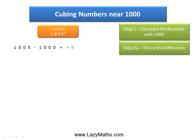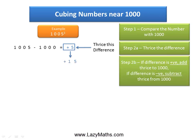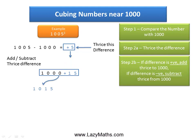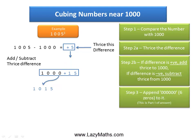The next step is to do thrice the difference. So 3 times positive 5 is positive 15. Then add this three-times difference to 1,000: 1,000 plus 15 gives us 1,015. The last step to get part 1 of the answer is to append six zeros to 1,015, giving us part 1 of the answer.